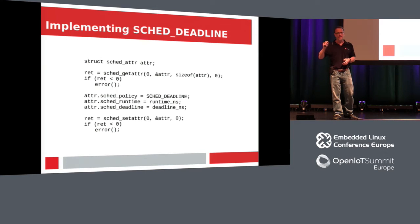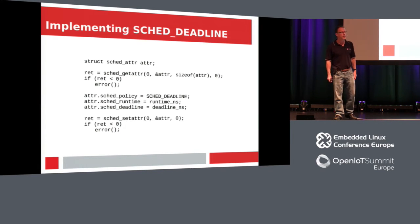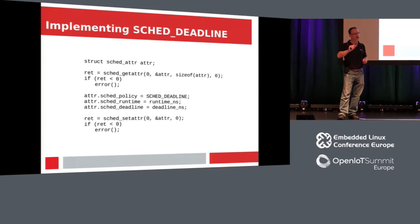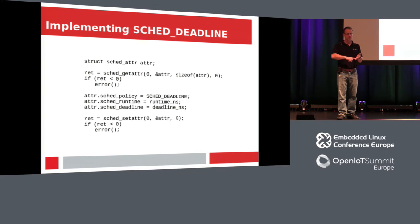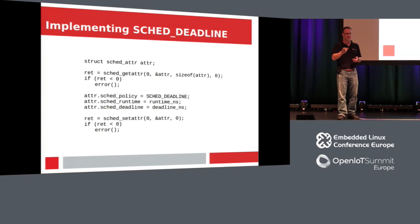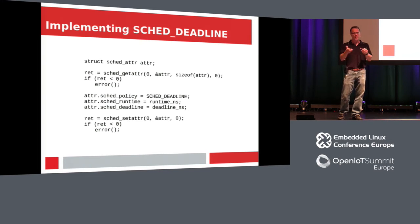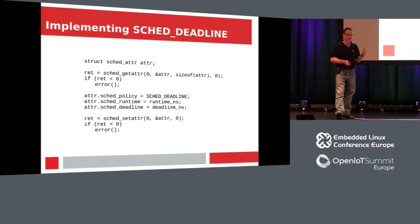One thing not in the slides: if you're doing anything less than a millisecond period — getting into nanoseconds — you need to make sure that HRTICK, specifically SCHED_HRTICK, is enabled. You can find it in /sys/kernel/debug/sched_features. If you look in there, you'll see HRTICK — make sure it's enabled. Otherwise the resolution will only be in milliseconds. High resolution timers may be compiled into your kernel, but if they're not enabled for the scheduler, you won't get the benefit from them.